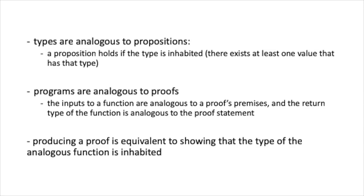So to be more specific, computational types are analogous to propositions, where the proposition holds if there exists a value of the type. Programs are analogous to proofs, where the inputs to a function are analogous to a proof's premise, and the return type of the function is analogous to the proof statement. So writing a proof is the same as showing that the type of the corresponding function is inhabited.